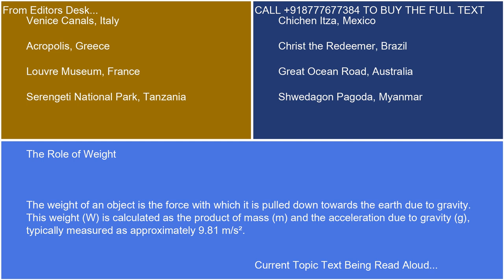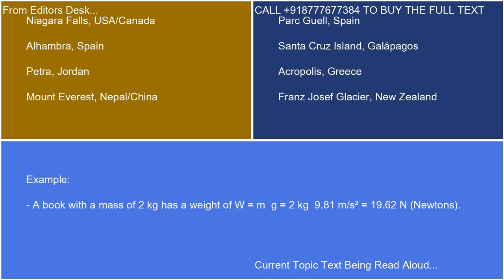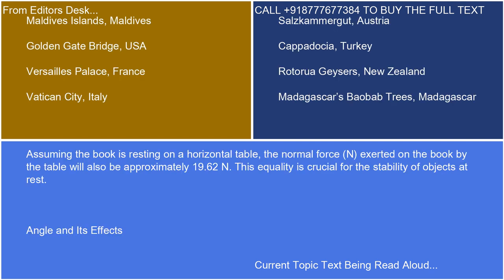The role of weight: the weight of an object is the force with which it is pulled down towards the Earth due to gravity. This weight, W, is calculated as the product of mass, M, and the acceleration due to gravity, G, typically measured as approximately 9.81 m/s². For example, a book with a mass of 2 kg has a weight of W = Mg = 2 kg × 9.81 m/s² = 19.62 N. Assuming the book is resting on a horizontal table, the normal force, N, exerted on the book by the table will also be approximately 19.62 N.